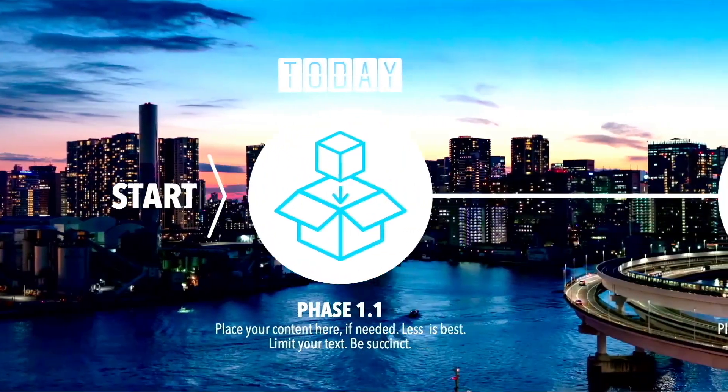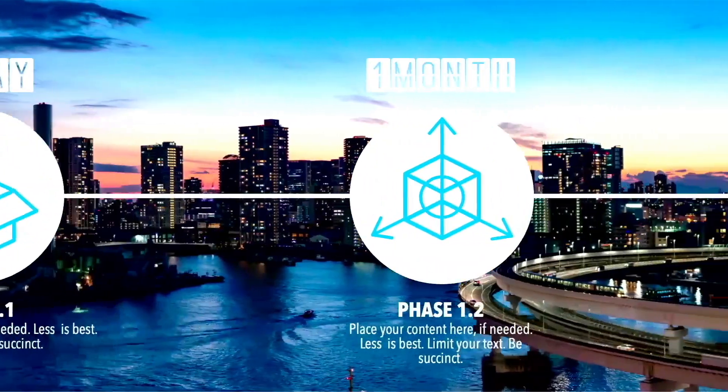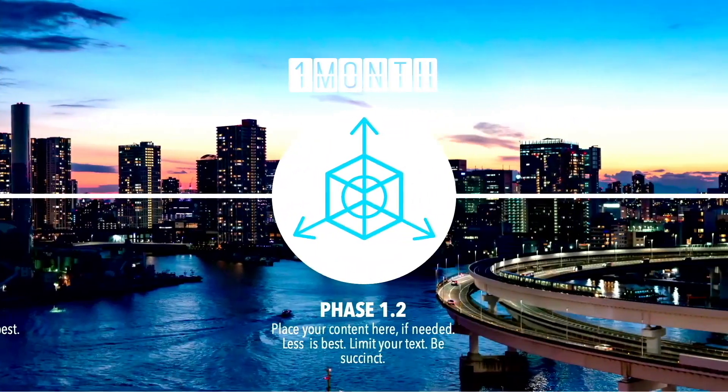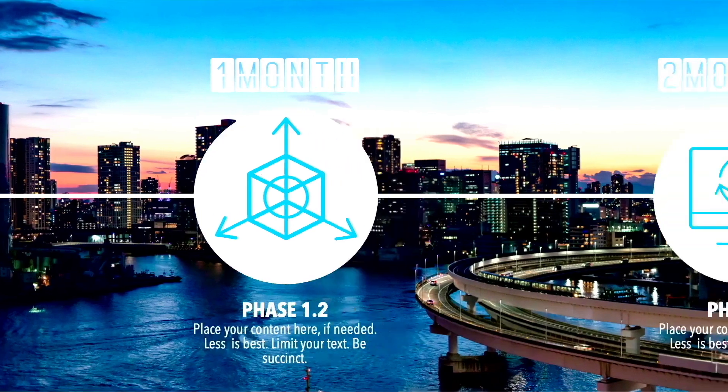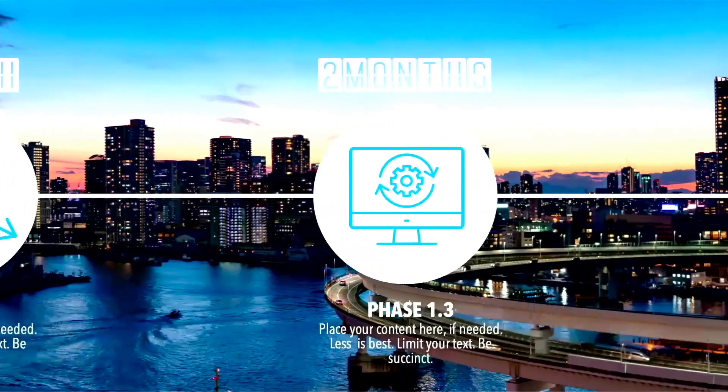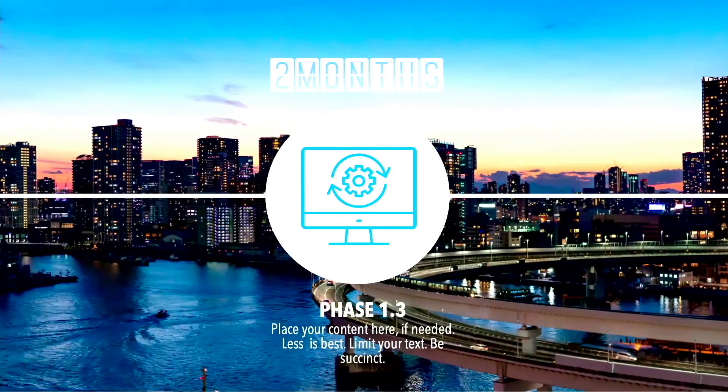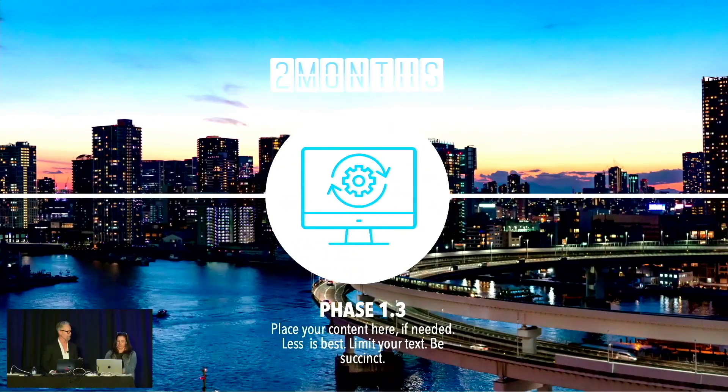When the foreground looks like it's moving at a different pace than the background, it gives it three-dimensional depth. This is a cool trick, very similar to Chris's, except for people who don't have 3D tools.